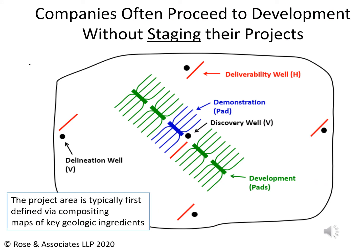One of the biggest problems we find with performance in unconventional resource opportunities is that most companies think they're in development for all their projects — in a continuous drilling mode without taking the time to evaluate the results of what they've already done. One of the things we're going to talk a lot about is the concept of staging our projects. There are four critical stages: discovery, deliverability, demonstration, and if we've made it through all those stages, then we're ready to go forward with development. This is one of the critical concepts we'll come back to again and again in the course.